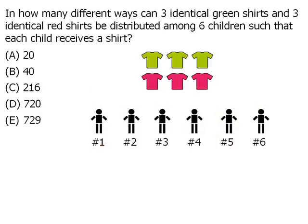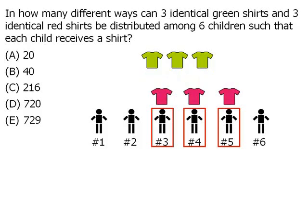Let's try that again. We'll choose any three children — those three children will receive red shirts, and the remaining green shirts will go to children who do not yet have shirts.